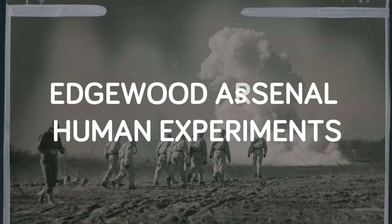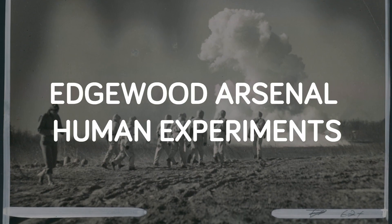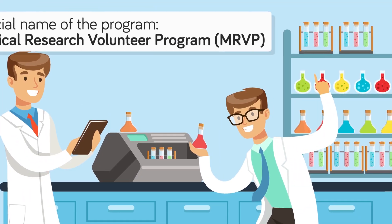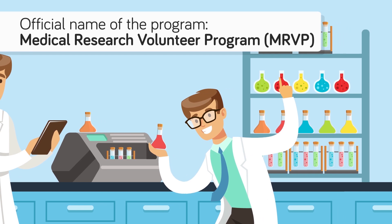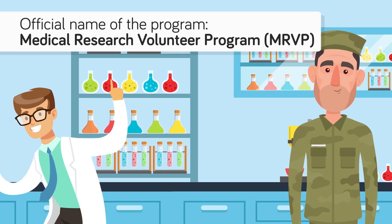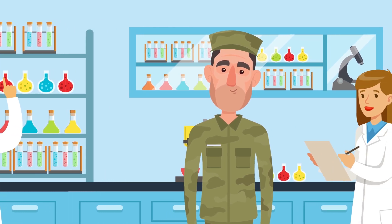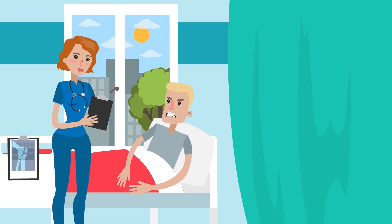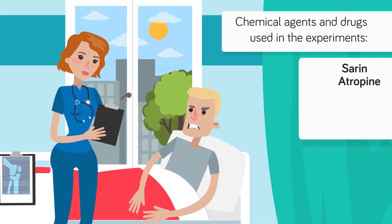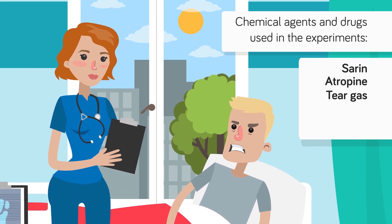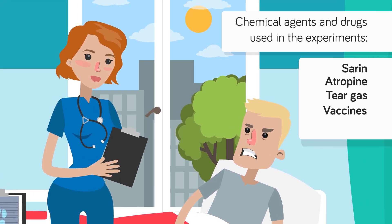About 7,000 soldiers participated in the US Army's secret testing program, officially named the Medical Research Volunteer Program. This testing is often referred to as the Edgewood Arsenal Human Experiments, because many of the tests were conducted at a military facility called Edgewood Arsenal, located in Maryland. Some soldiers were exposed to various chemical agents including nerve agents such as sarin, nerve agent antidotes such as atropine, and riot control agents such as tear gas. Others were used to test protective clothing, vaccines, and drugs such as LSD.